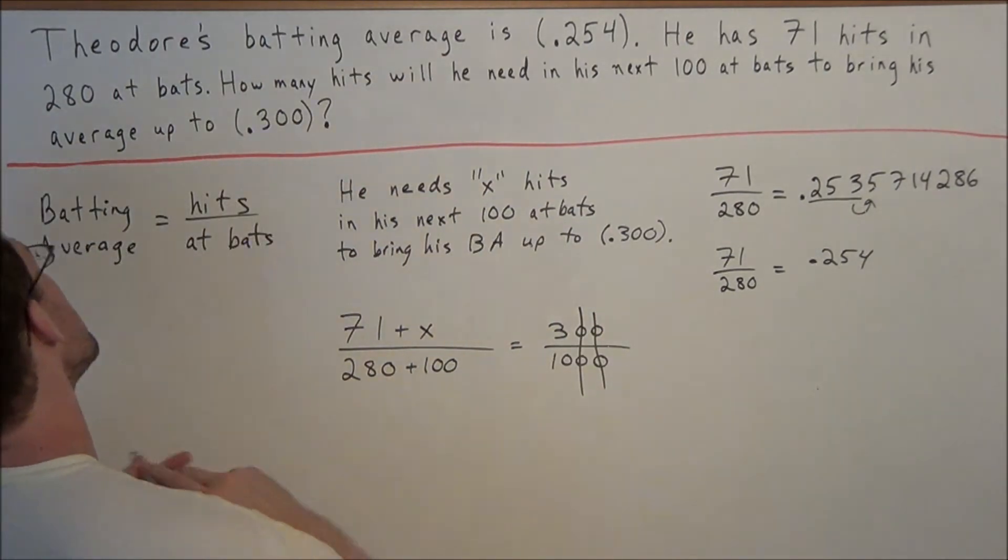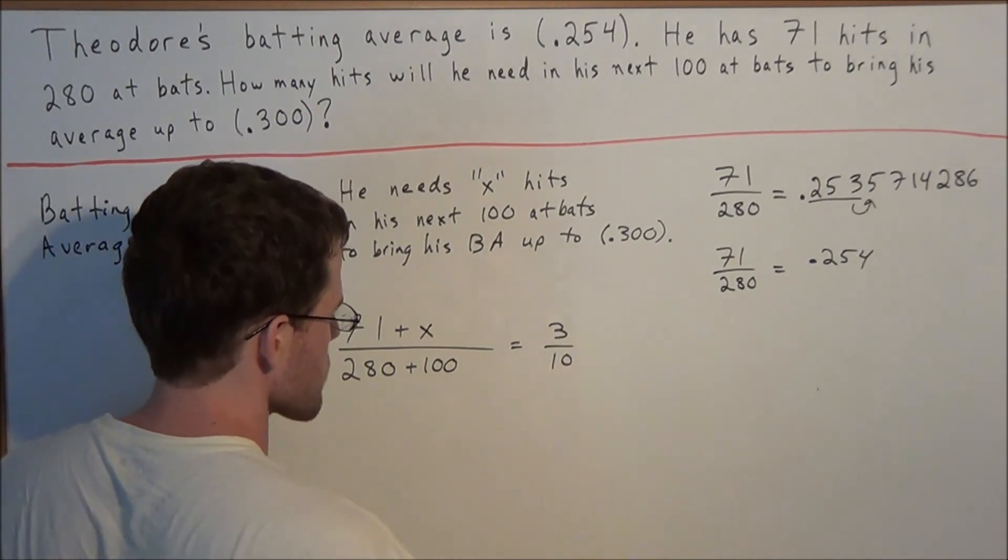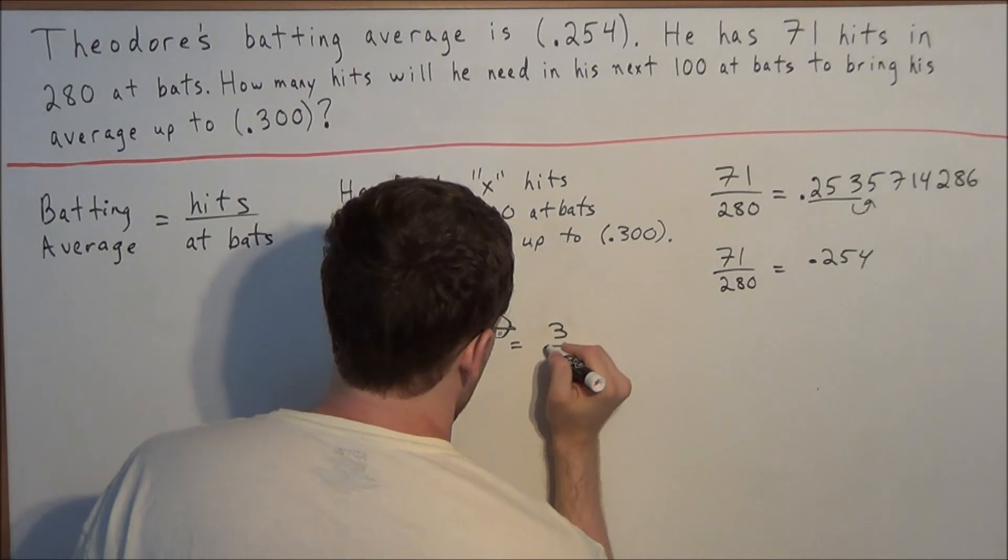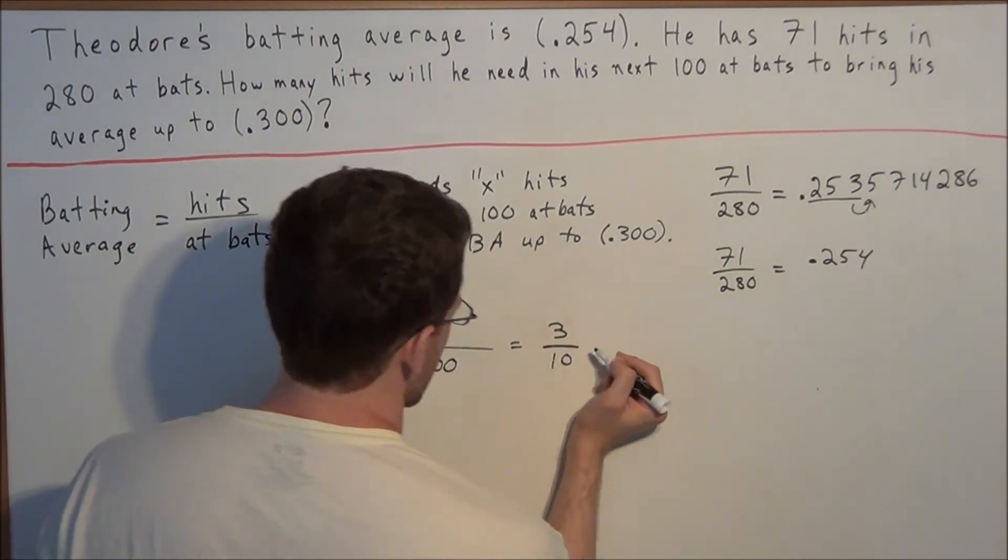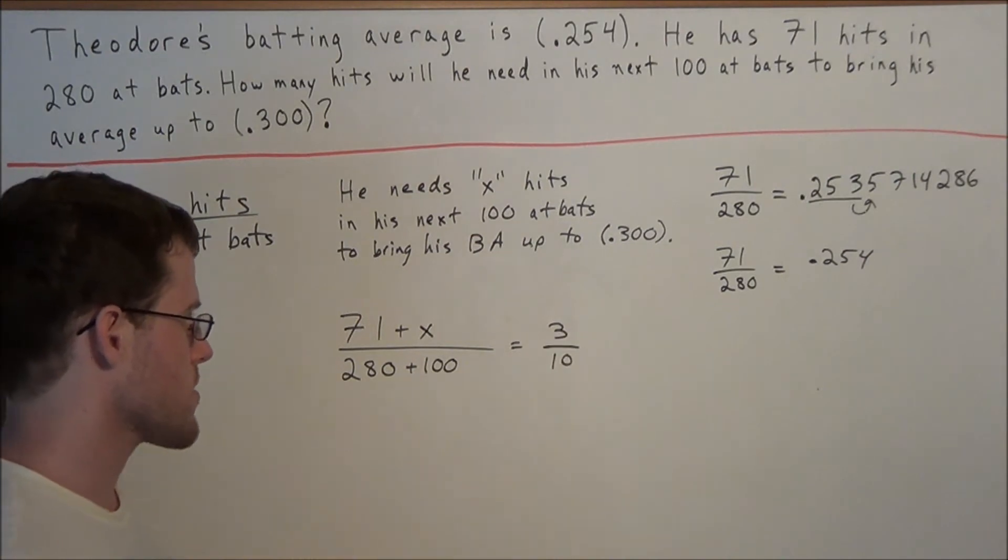Common zeros we can cross off so that the numbers are easier to work with when we solve this problem. We can set this equal to 3 over 10, because 300 over 1,000 reduces to 3 tenths.